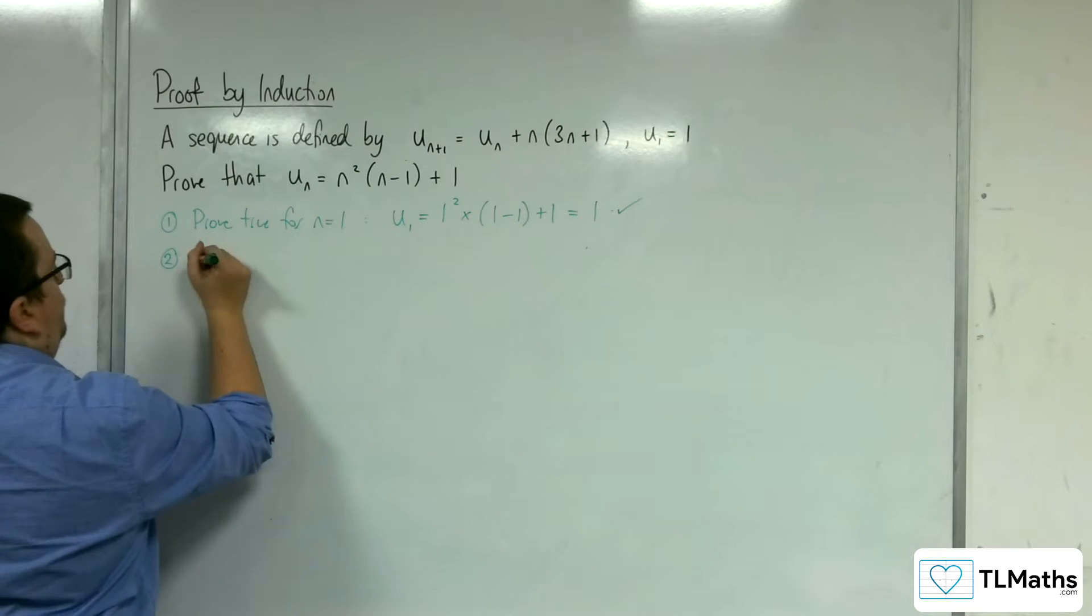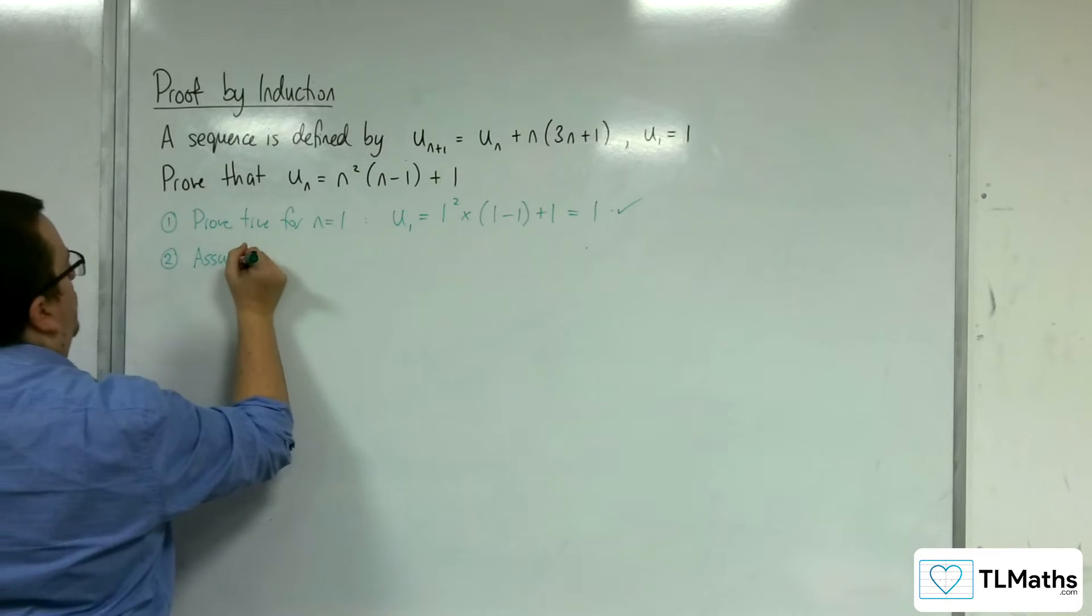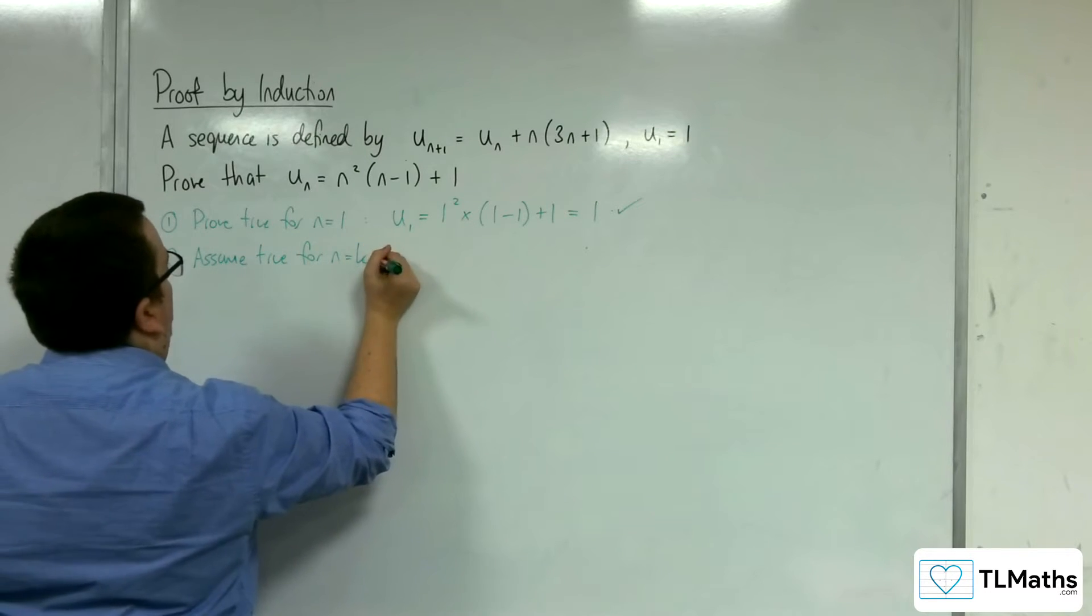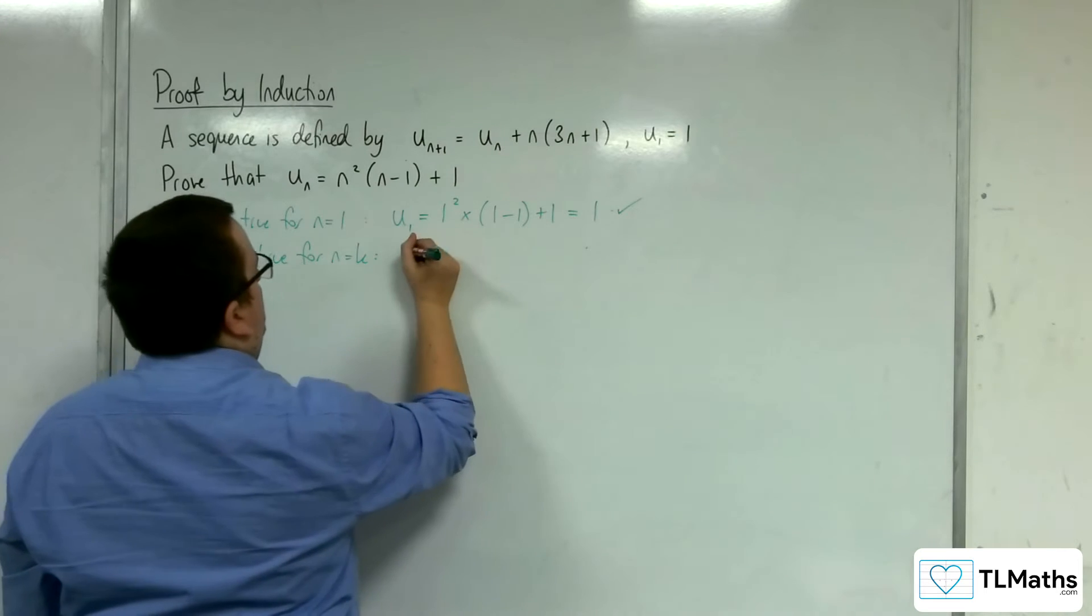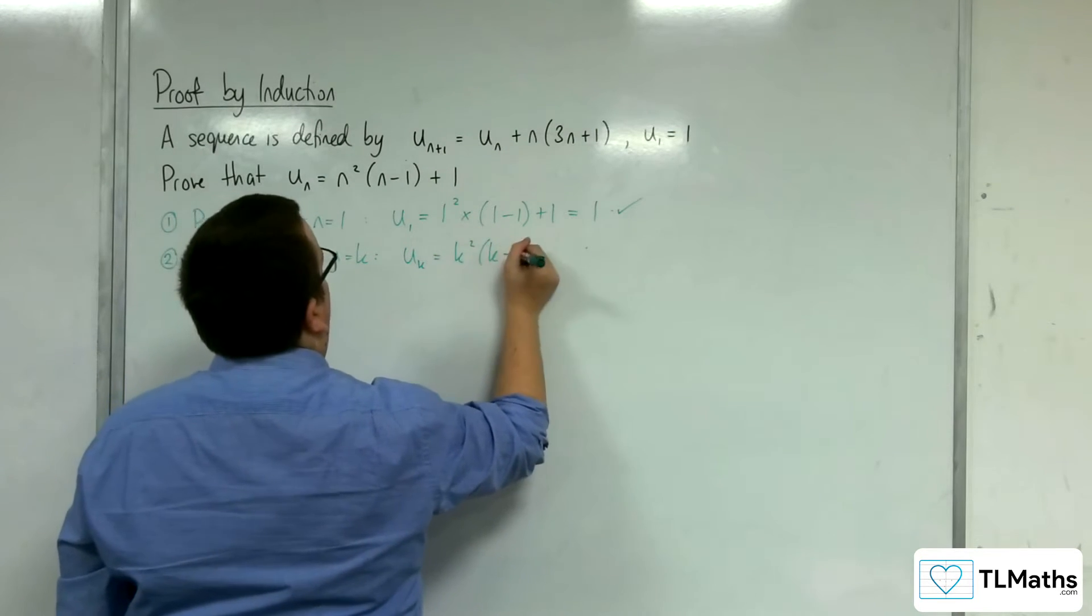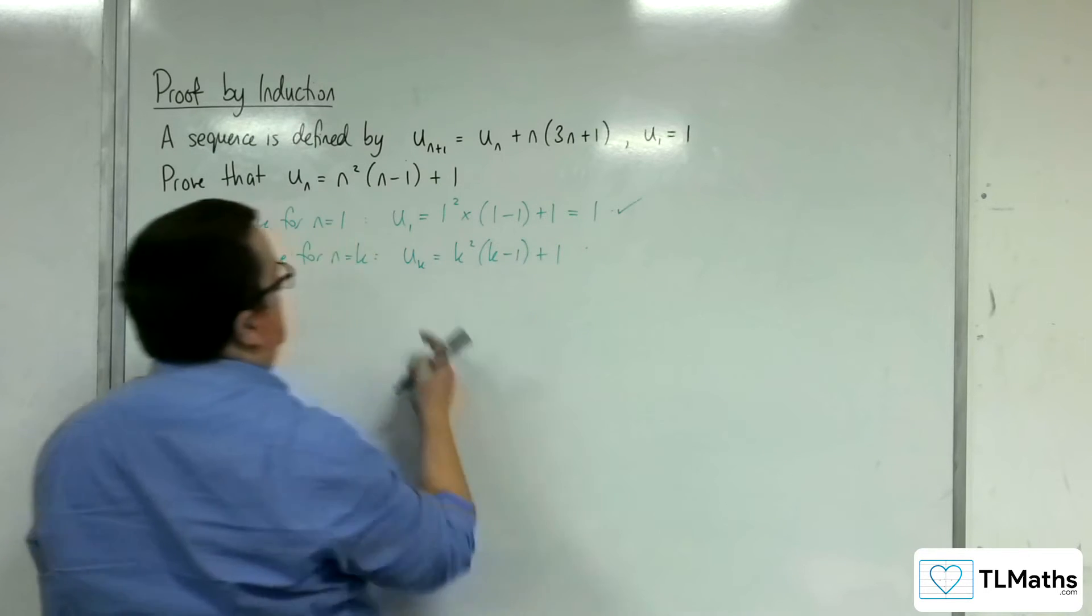Stage 2: Assume true for n equals k. So u_k will be equal to k²(k-1) + 1.